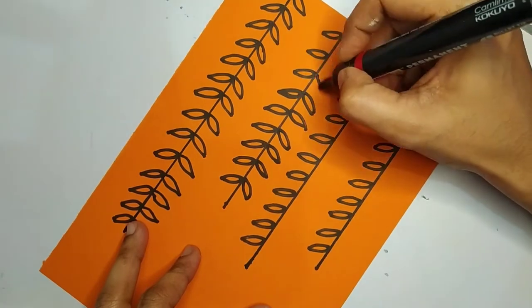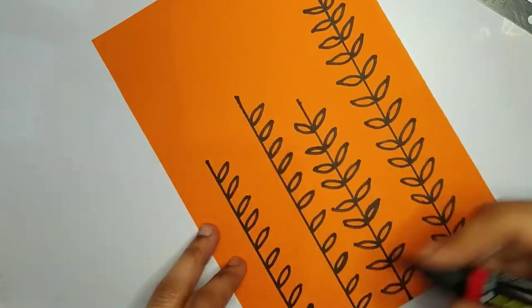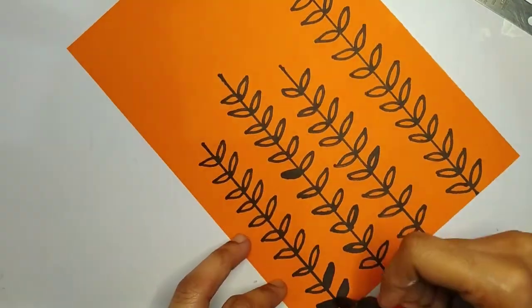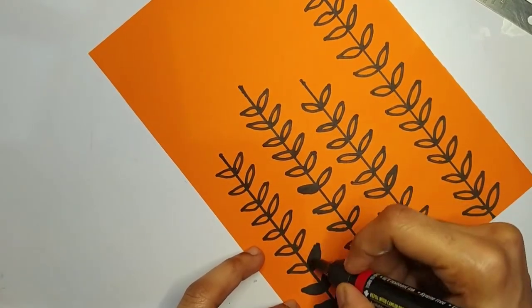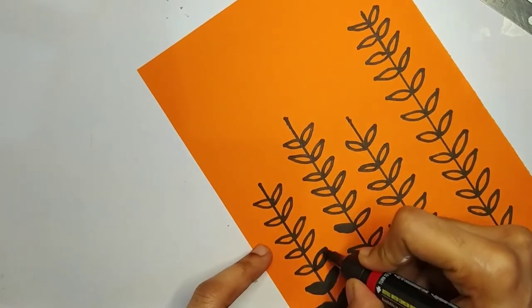You can draw one leaf shape and then just paint it on top of it. That is of your choice. If you can draw it directly then just draw it, or you can also paint it.